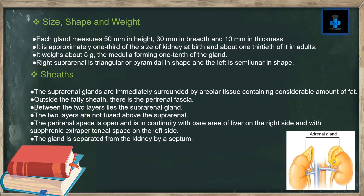The left suprarenal gland is semilunar in shape. Sheets: The suprarenal glands are immediately surrounded by areolar tissue containing a considerable amount of fat. Outside the fatty sheath there is a perirenal fascia; between the two layers lies the suprarenal gland. The two layers are not fused above the suprarenal. The perirenal space is open and is in continuity with the bare area of the liver on the right side and with the subphrenic extraperitoneal space on the left side. The gland is separated from the kidney by a septum.